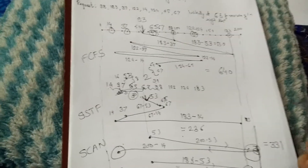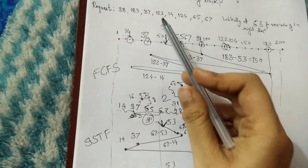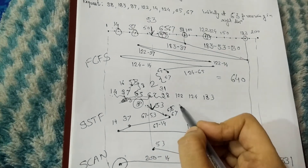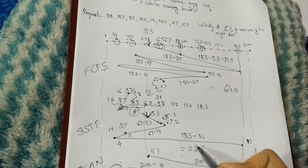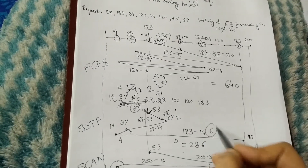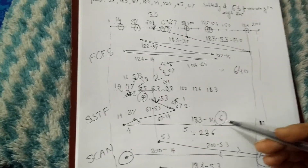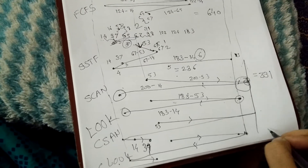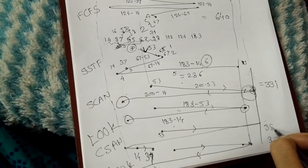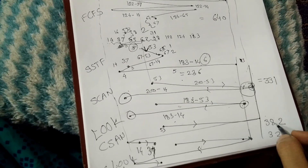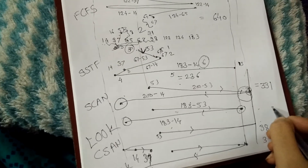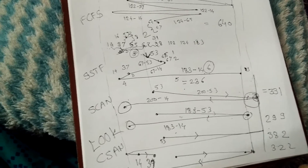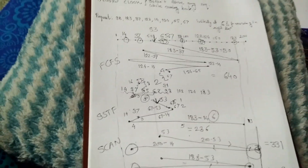Exam questions may also ask at which step a particular request is served — for example, in LOOK, request 65 is served first, then the head moves up through further requests, then returns, and 122 is served as the sixth request. The seek times for the different algorithms are approximately: SCAN = 382, C-LOOK = 322, and LOOK ≈ 299. These values are summarized for comparison.